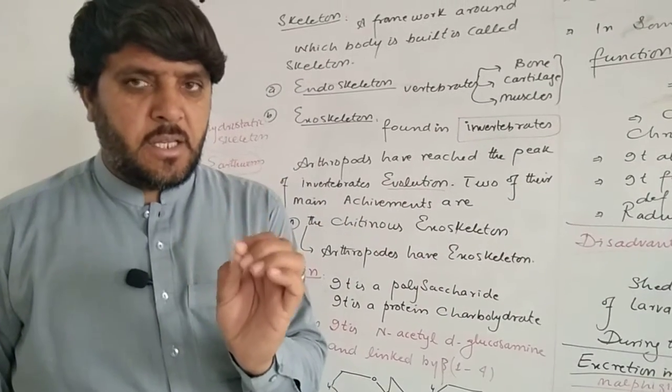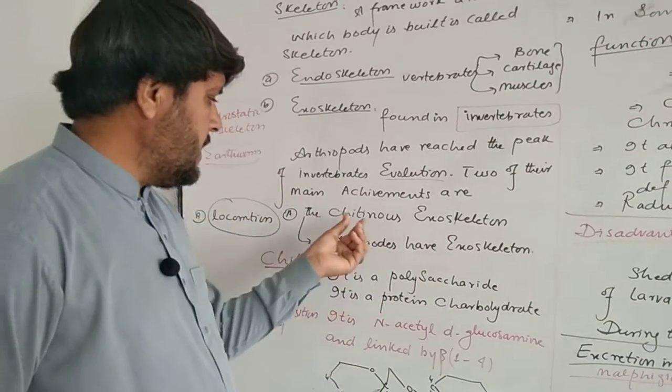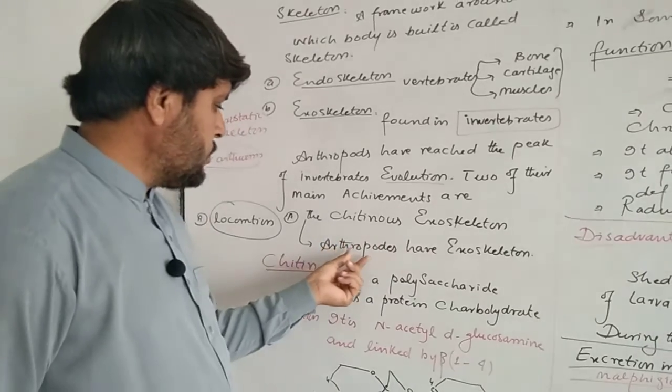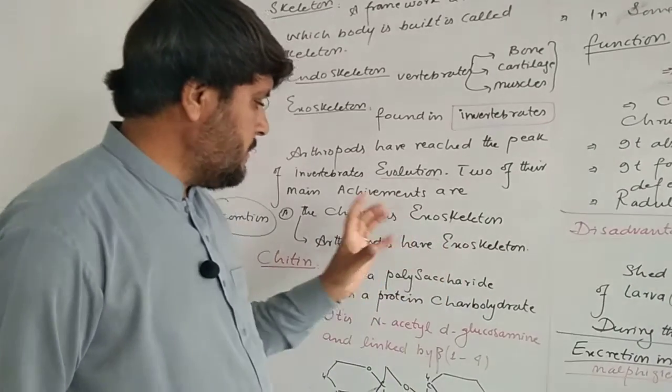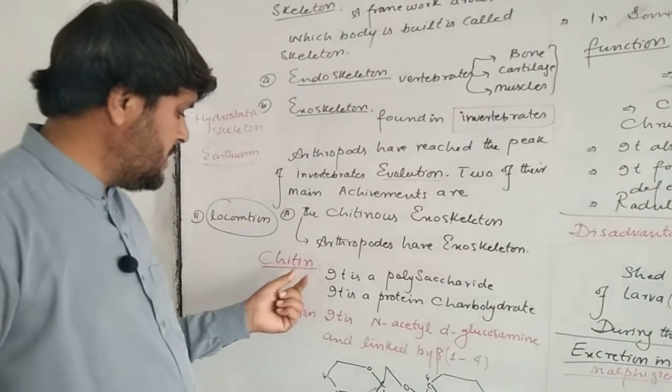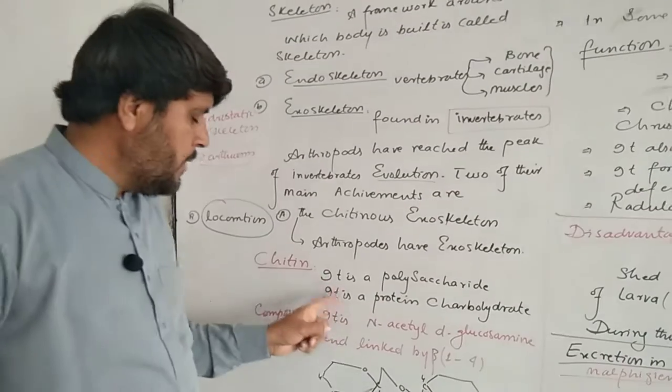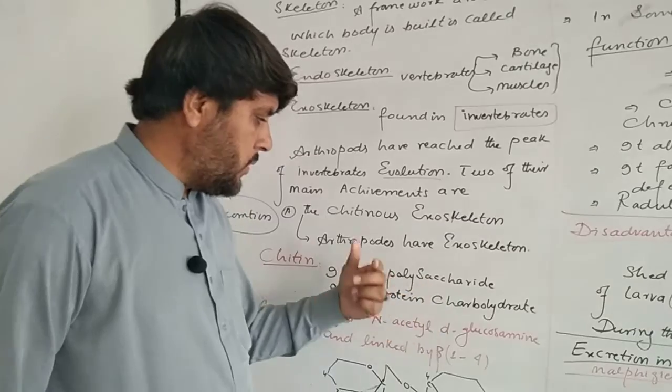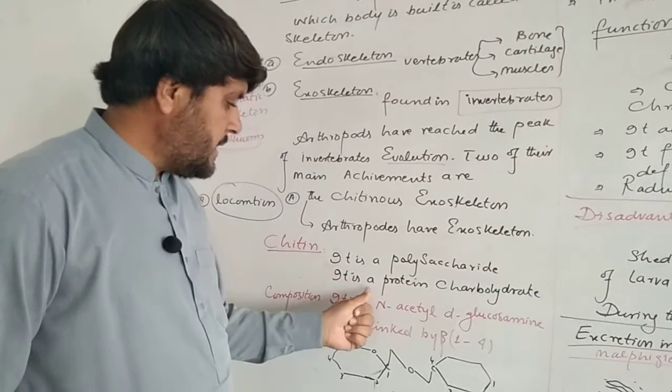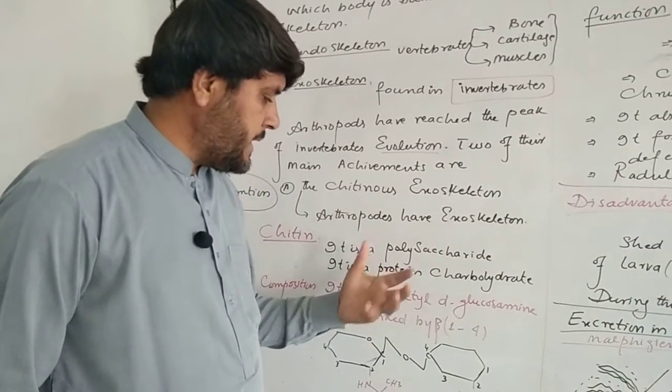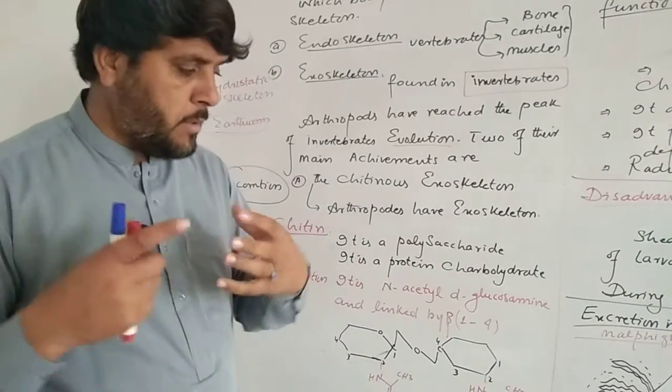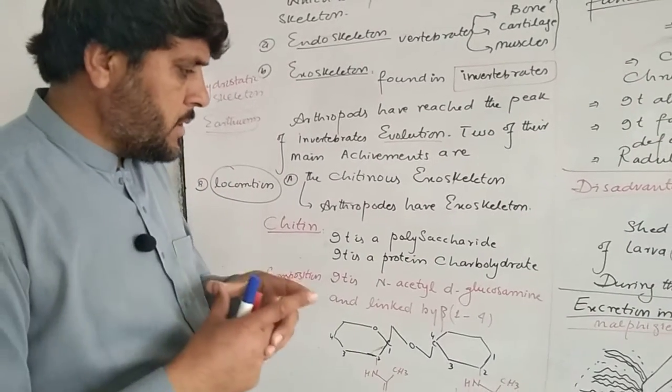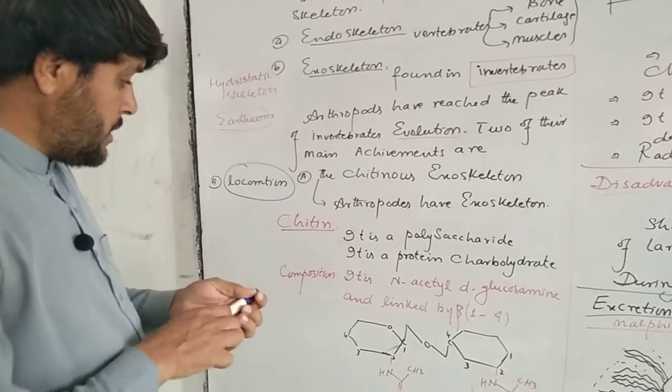The chitinous exoskeleton - arthropods have exoskeleton which is composed of chitin. What is chitin? Chitin is a modified polysaccharide. It is a protein-carbohydrate complex, a biopolymer complex molecule.